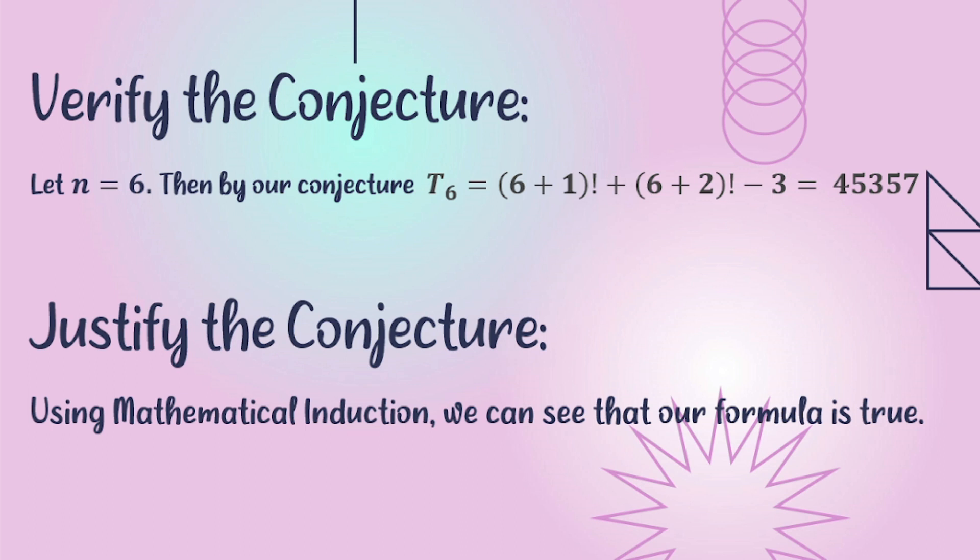we get t sub 6 = (6+1)! + (6+2)! - 3 = 45,357.